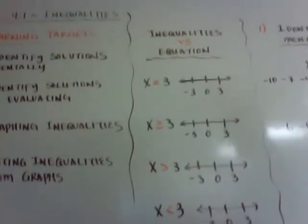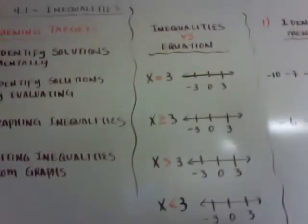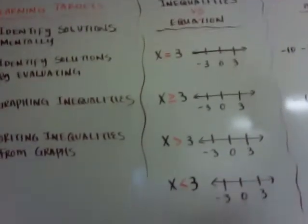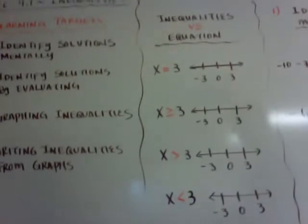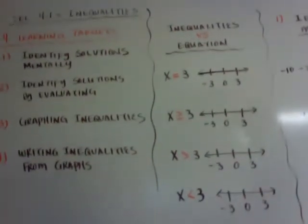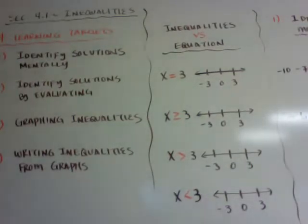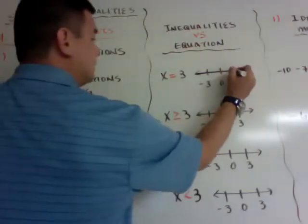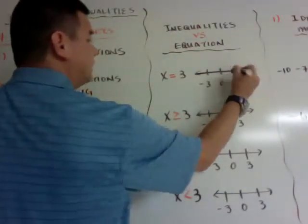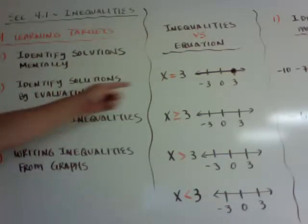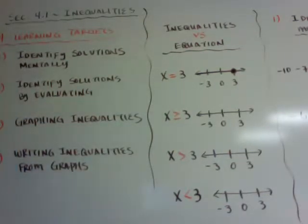Before we get to those, I just want to explain the difference between inequality and equation. So far we've been dealing with equations and solving them. When you graph an equation, like x is equal to 3, all you did was put a dot on it. You're saying x is equal to 3 — you had one solution, just 3. But now we're going to have multiple solutions.